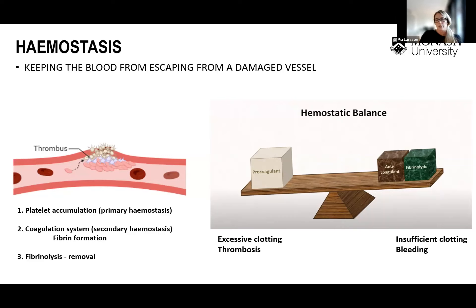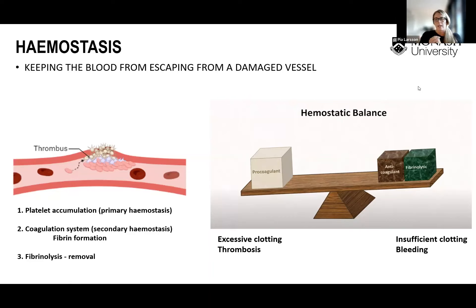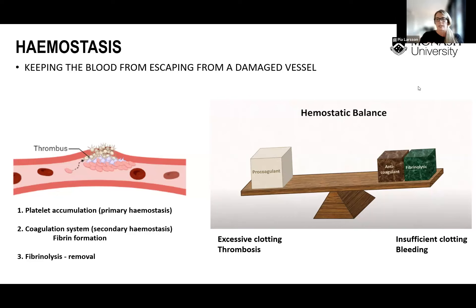Another important concept is hemostatic balance — the idea that we have pro-coagulant or pro-thrombotic factors on one side of this balance and anti-coagulant and fibrinolytic anti-thrombotic mechanisms on the other. If this balance is shifted towards the pro-coagulant, pro-thrombotic side, we will get excessive clotting leading to different types of thrombotic disorders. On the other hand, if it's shifted towards the anti-coagulant side, we will get insufficient clotting and bleeding disorders.